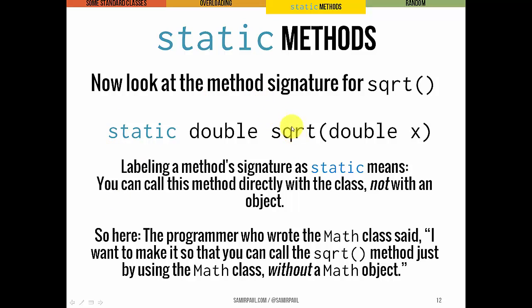The square root method takes a double as an input, and it returns a double as an output. Labeling this method signature as static basically means, whereas with a scanner, we have to have a particular scanner object, a particular instance of the scanner class in order to use scanner's methods.